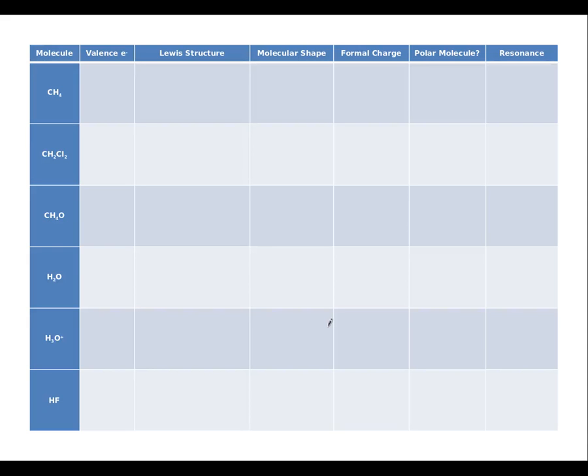Okay we're looking at our first set of Lewis structures on the lab. Alright so starting here with CH4. I'm gonna put a little bit more detail on here but carbon has four valence electrons, hydrogen has one. This will give us a grand total of eight valence electrons.